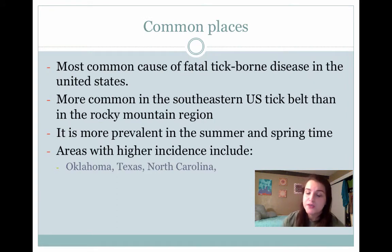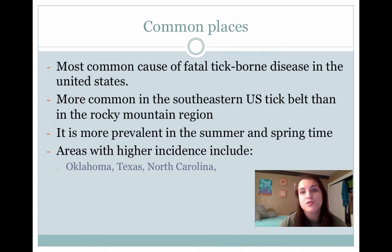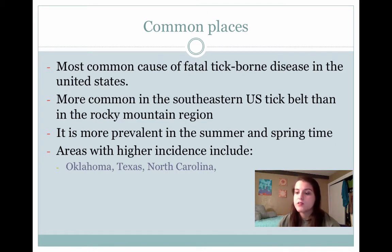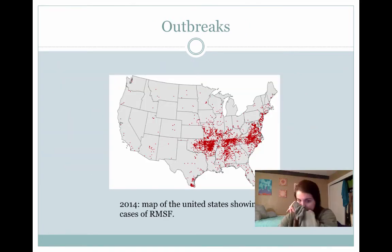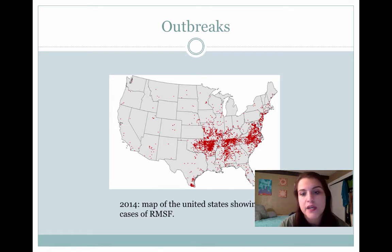There are more common areas where you can contract Rocky Mountain Spotted Fever. It's more common in the southeastern U.S. than in the Rocky Mountain region, and it's more prevalent in the summer and springtime. Common areas include Oklahoma, Texas, and North Carolina, but it's also seen in areas like New York, Rhode Island, Cape Cod, and Long Island. It's been seen in all 48 contiguous states — all except Hawaii and Alaska. Here's a map of the 2014 outbreak showing it's more common in those areas, including Texas, Oklahoma, and Delaware.